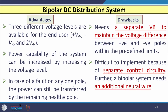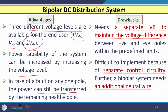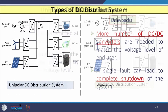The bipolar DC distribution system offers three voltage levels (+VDC, −VDC, 2×VDC), and if a fault occurs on one pole, power can still be transmitted through the healthy pole. However, it requires a separate voltage balancer circuit to maintain the voltage difference between positive and negative poles within prescribed limits, a separate control circuit, and an additional neutral wire.